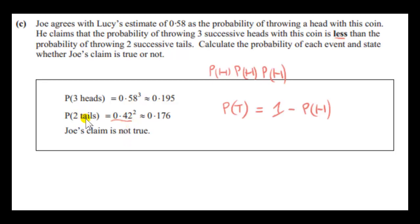The probability of getting two tails in a row, again, we're dealing with independent events, is 0.42 times 0.42, which is 0.176. Since 0.176 is less than 0.195, we conclude that Joe's claim is not true.